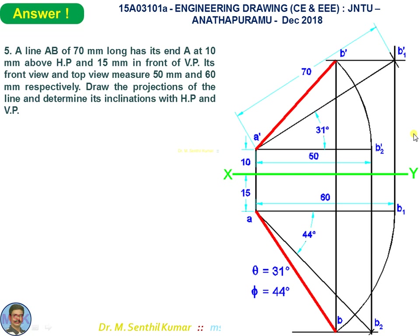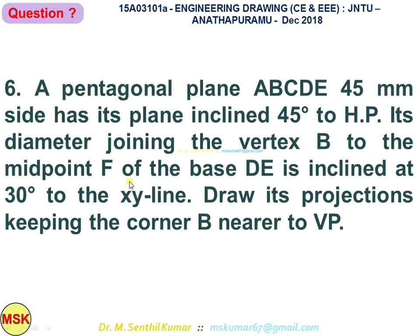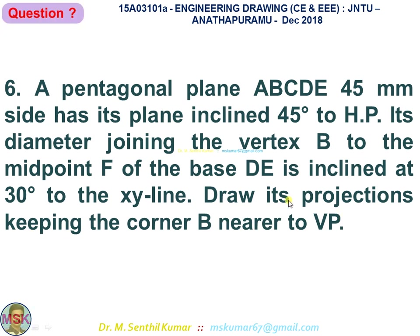Problem number six: a pentagonal plane ABCDE with 45 mm side has its plane inclined 45 degrees to HP. Its diameter joining vertex B to the midpoint F of base DE is inclined at 30 degrees to the XY line. Draw its projections keeping corner B nearest to VP. Since the plane is inclined to HP, assume it starts parallel to HP and begin from the top view.